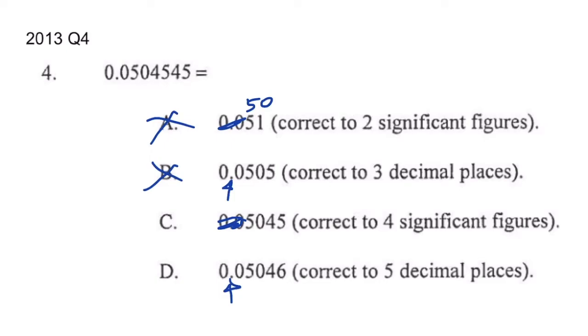How about the next one - four significant figures? Well, initial zeros are not counted: one, two, three, four. And the next number is four, so do we have to change this five to six? No, we don't. So it will be 0.05045. This is correct. Let's look at choice D.